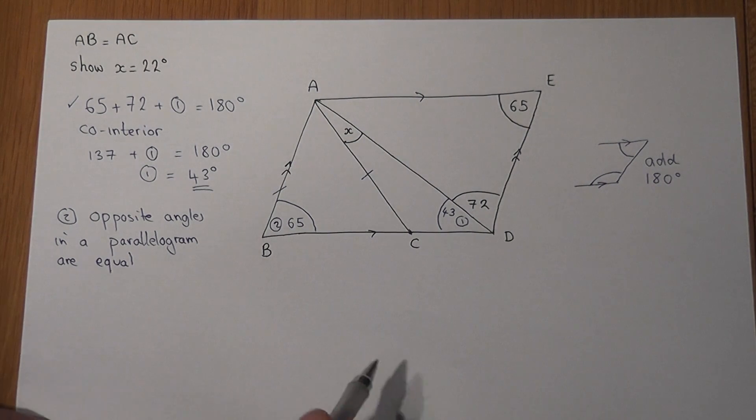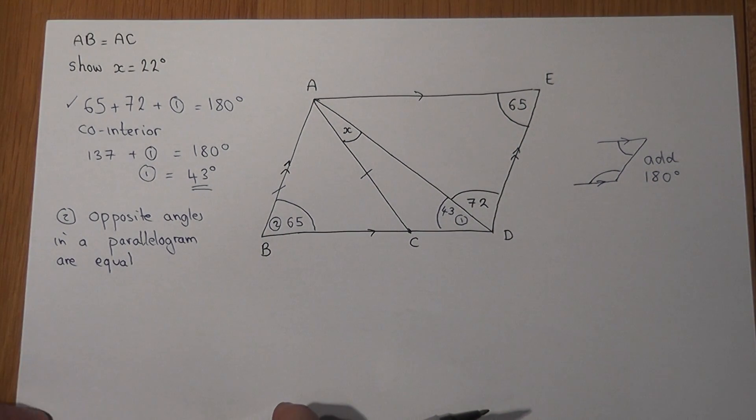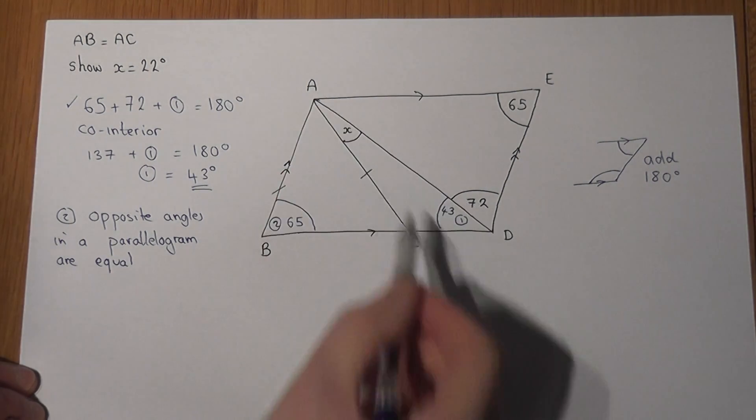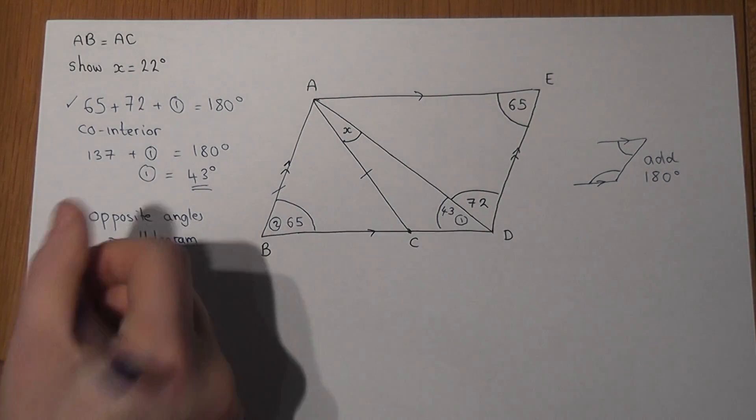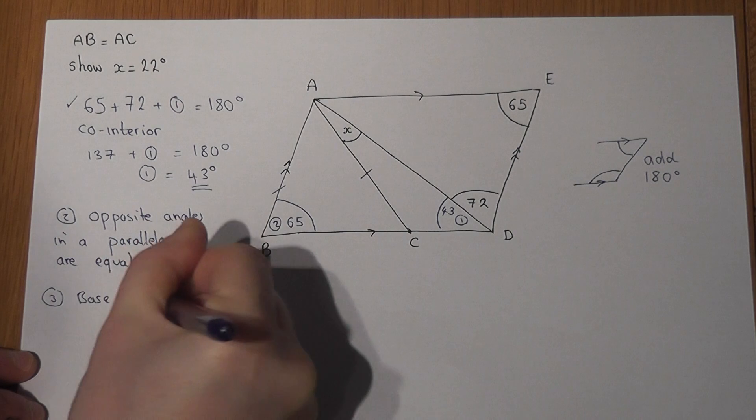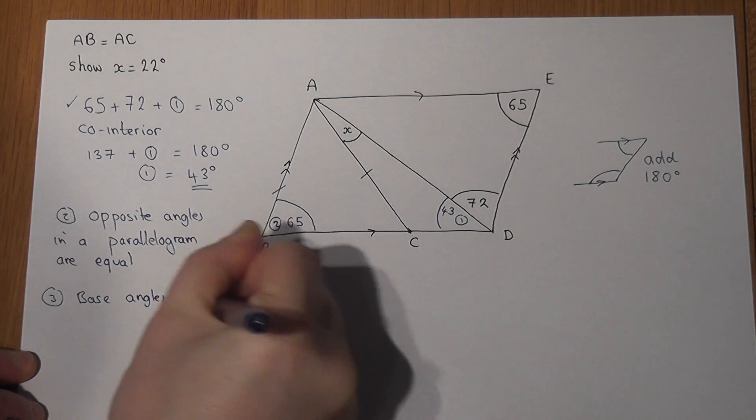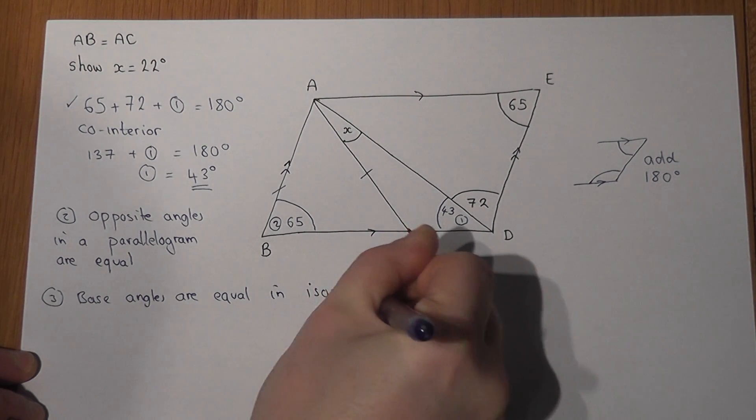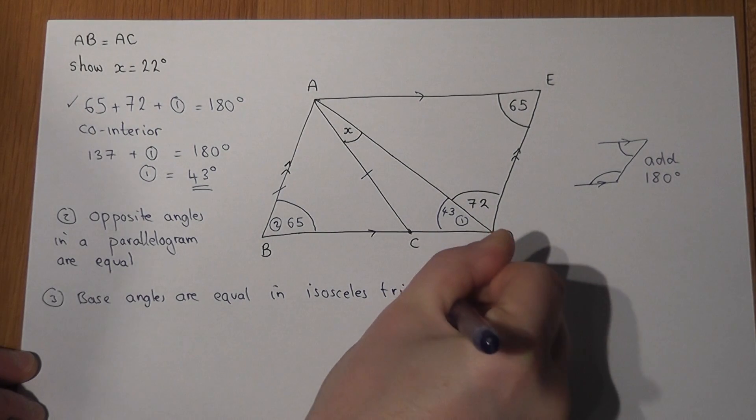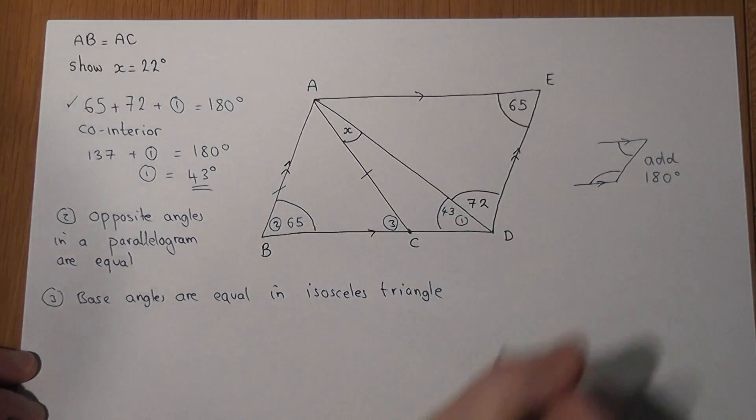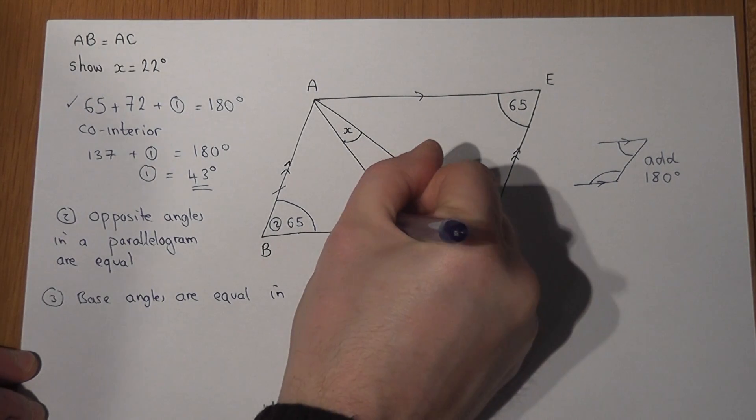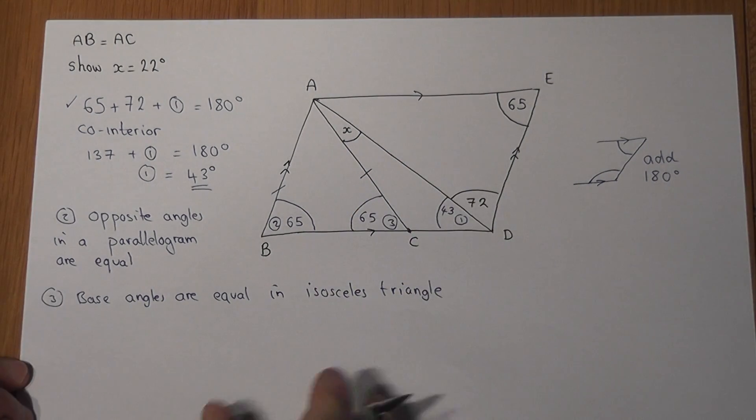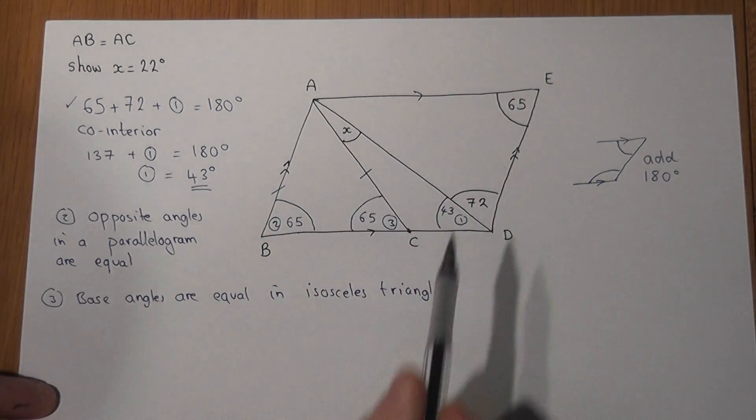So I've shown a reason behind this calculation here. Now the next step is I've got an isosceles triangle, and what we know is that the base angles in an isosceles triangle are equal. This therefore means that I can find out this angle straight away. This has got to be 65. I'm just filling in angles as I find them because I've now almost got enough to find x, because x is inside this little triangle here in the shape.